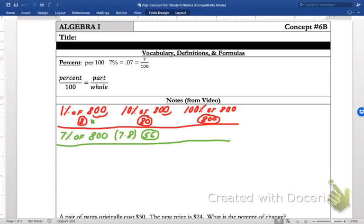Let's try this one. What is 50% of 64? Well, 50% of 64 is half of 64, which is 32.